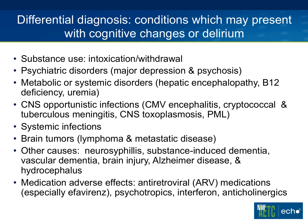Then there are opportunistic infections, systemic infections, brain tumors, neurosyphilis, substance-induced dementia, vascular dementia, brain injury, and Alzheimer's disease. Our population is getting older — the average age of our HIV-positive patients is now about 46. So as people get older, there will be more and more other reasons for cognitive decline, specifically vascular disease and Alzheimer's disease.